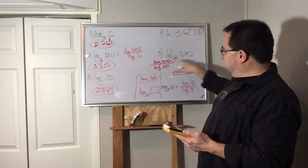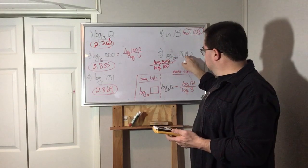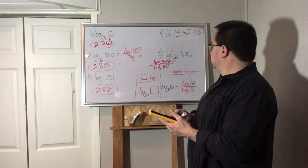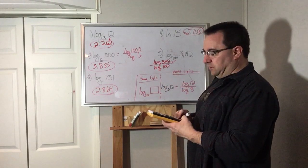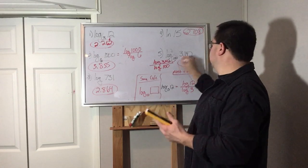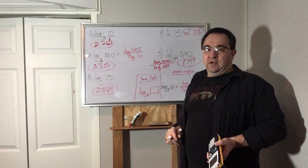This one, I can't - there is no log 100 button. So I got to type in regular log 3,142, enter, divided by regular log 100. And for this answer, I get 1.749.